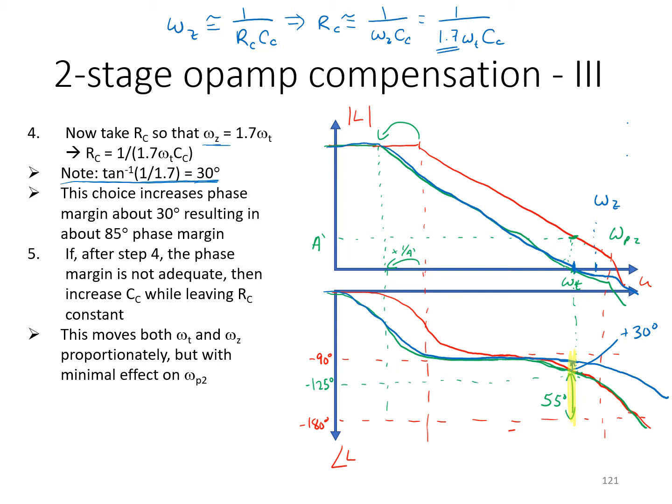Now, it is possible that when you play with all these compensation network components that you will slightly shift around the second poles or some other poles or zeros that can cause the phase margin to be a little bit off from what you're targeting. So, if you find after step four here that the phase margin is still not adequate, then you can always circle back and increase CC a little bit further while leaving RC constant. That'll just give you a little bit extra dominant pole compensation and eventually you can trade off bandwidth for more phase margin until you've achieved your spec.